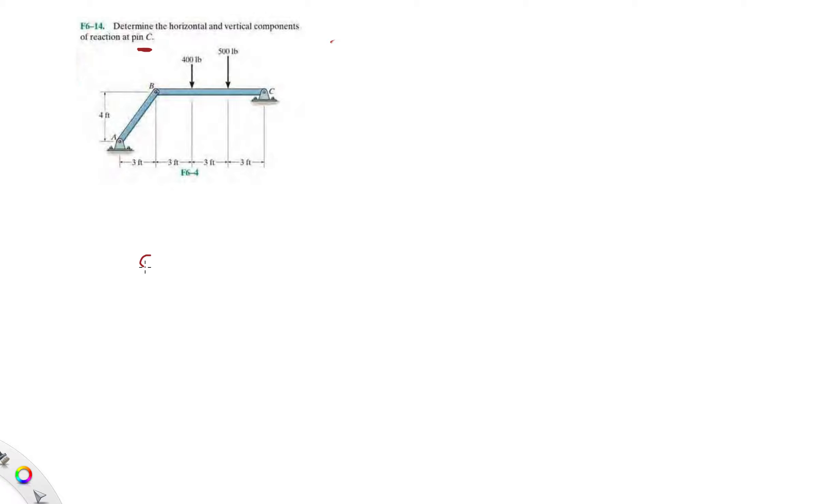They're looking for the forces, the vertical and horizontal components at the reaction component at pin C. What I want to do is isolate member BC. We have 400 pounds, we have a 500 pound force here, and then we'll draw the two-force member AB in tension.